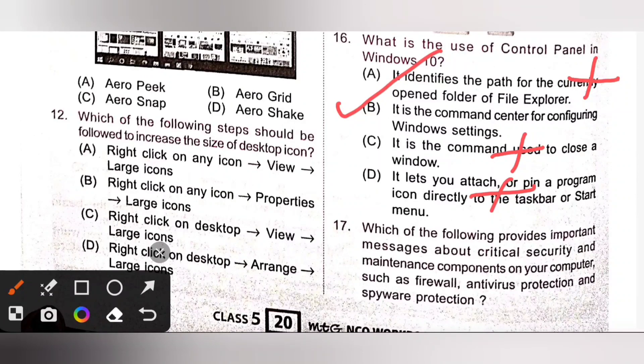Control panel is used for changing various settings of the computer system running Windows 10, hence it is the command center for configuring Windows settings. Using it, we can install or uninstall a program, change date and time settings, view and update hardware settings, etc. Option B is the correct answer.